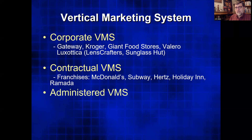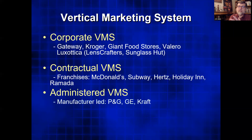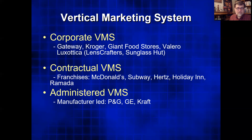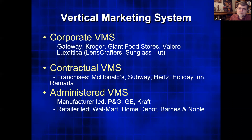We also have administered VMS, which is neither corporate nor contractual. It's where one member of the channel has a lot of power. For instance, it might be manufacturer-led, like Procter and Gamble — a very powerful company with many brands — or General Electric, or Kraft. A supermarket needs so many Procter and Gamble or Kraft products that they're going to do what those companies want. Others are led by the retailer — probably the most powerful is Walmart.